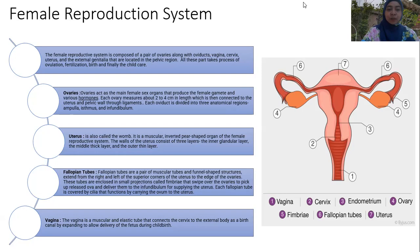The fallopian tubes are a pair of muscular, funnel-shaped structures extending from the right and left ovaries to the superior corners of the uterus. The open ends of the tubes connect the uterus and the ovaries. These tubes have small projections called fimbriae, which sweep over the ovaries to pick up the ovum and bring it to the uterus.